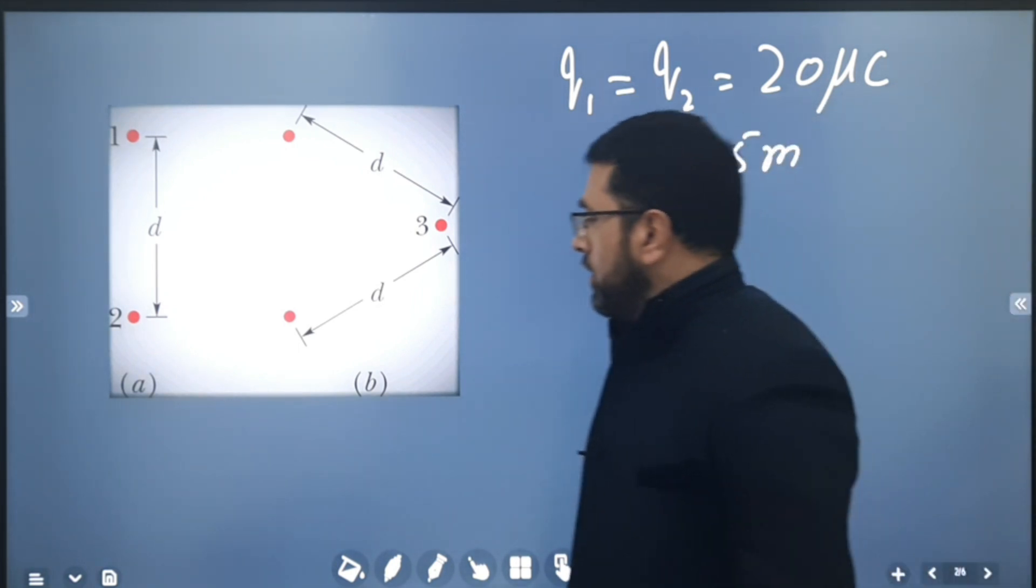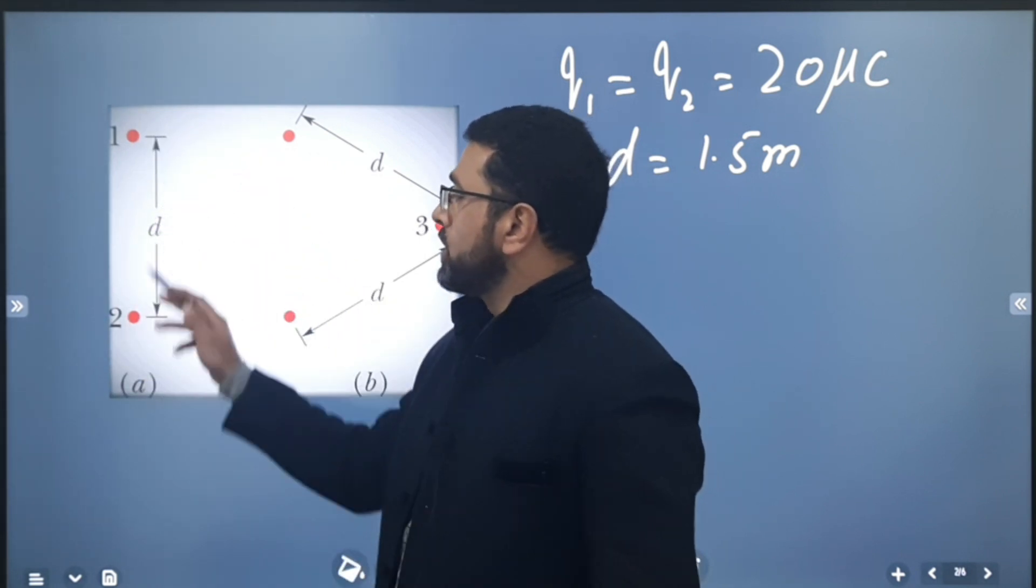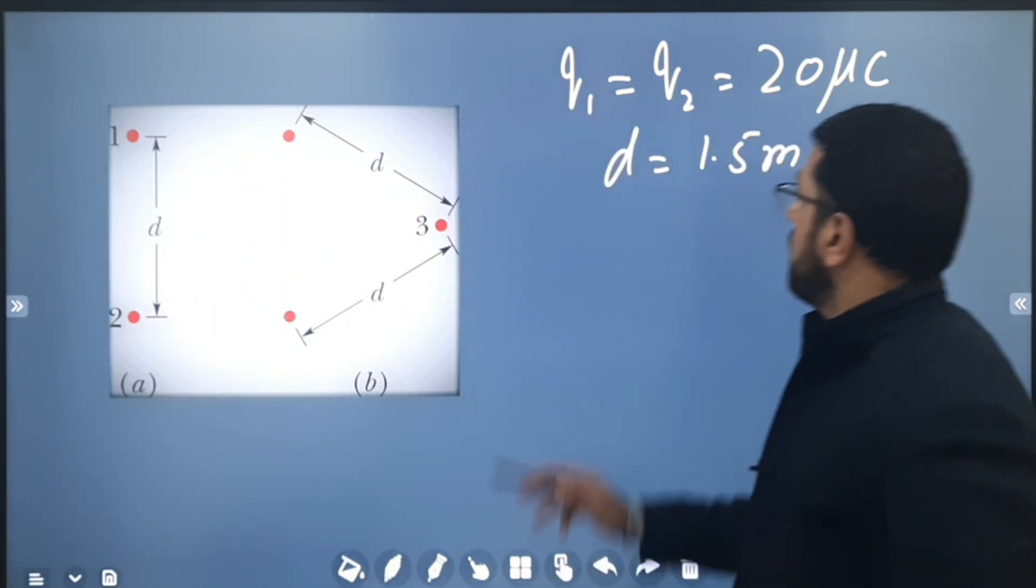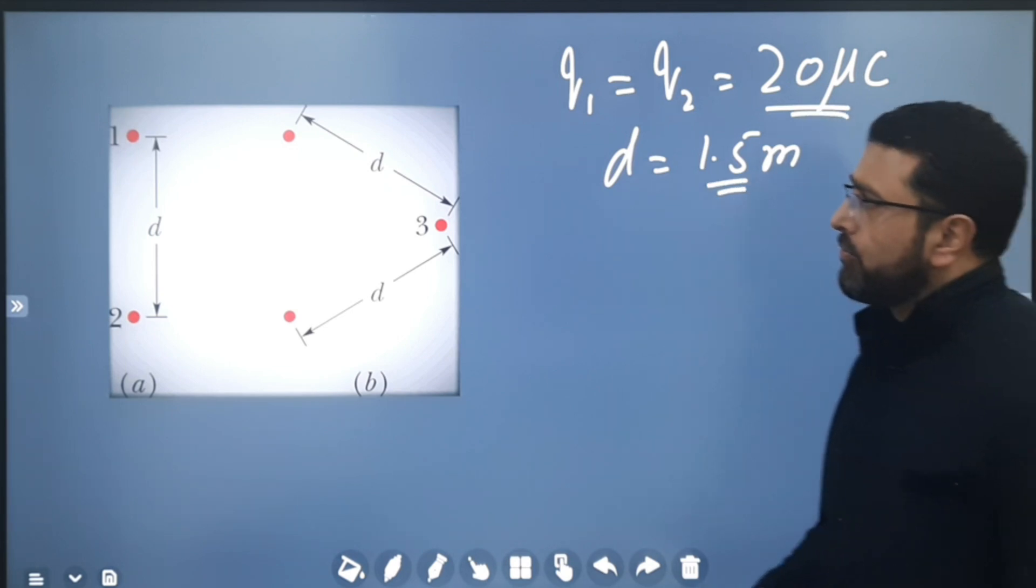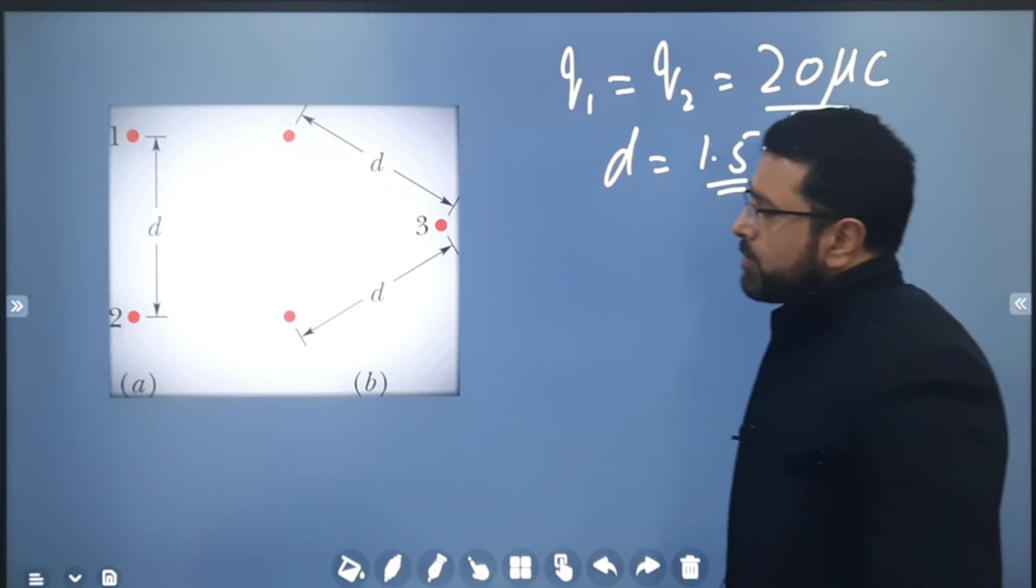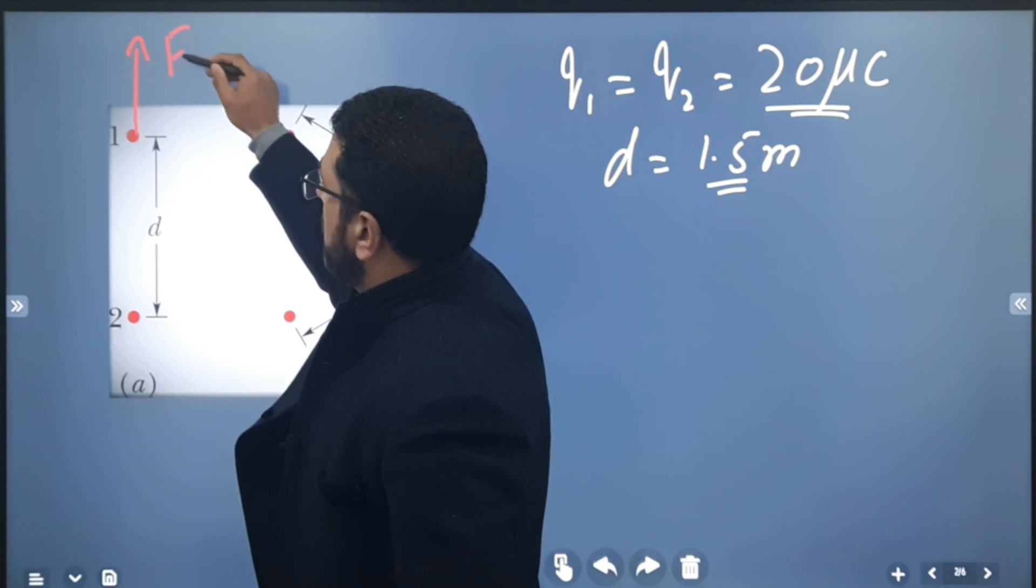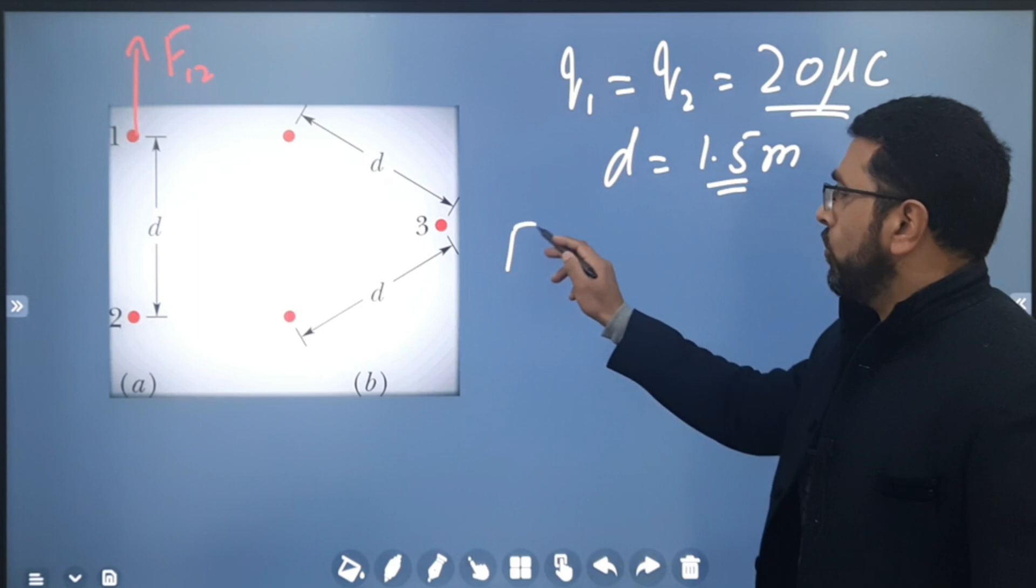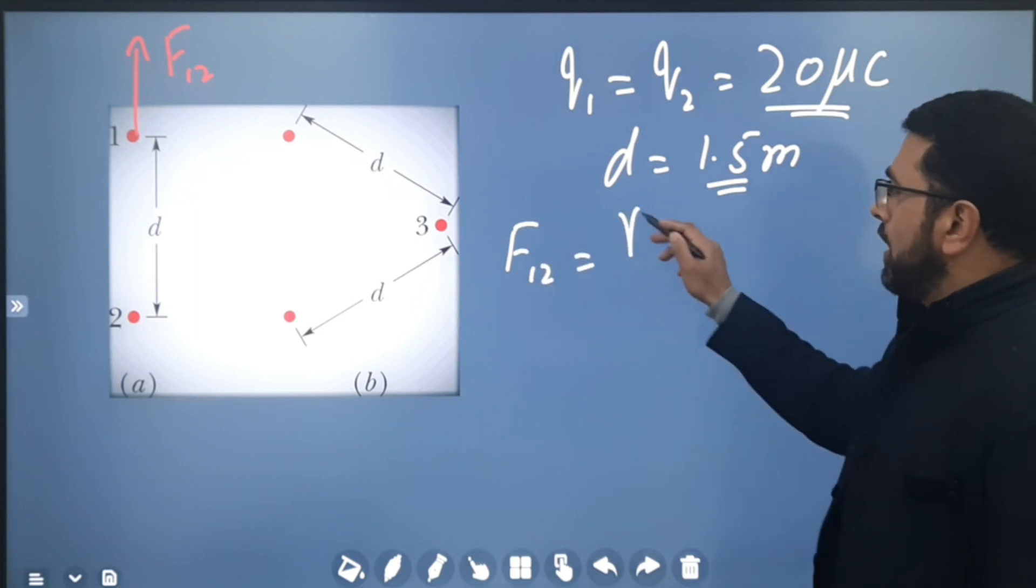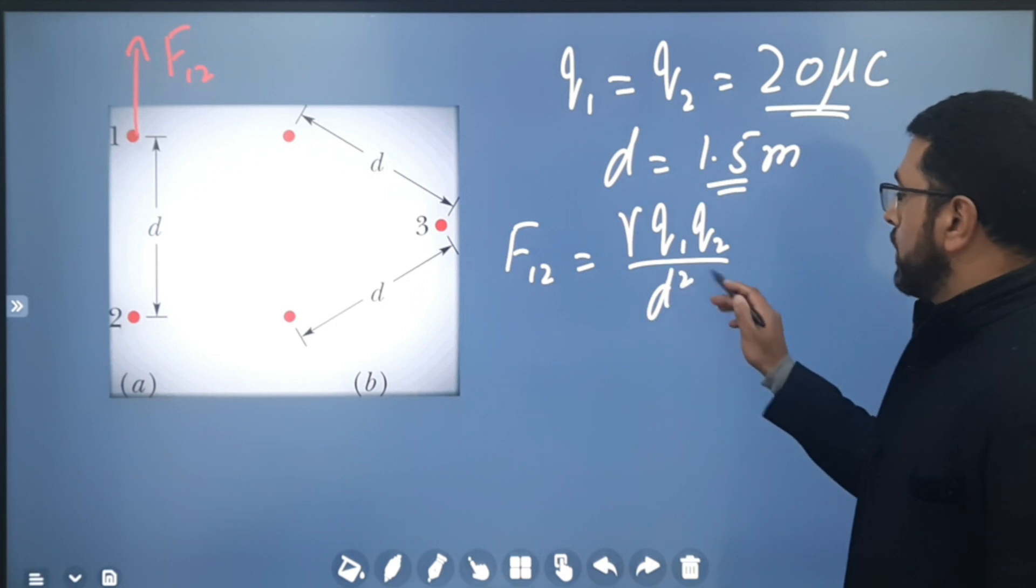So in diagram A, we are given two charged particles, 1 and 2. Both are having the same charge, 20 microcoulombs, and are separated by 1.5 meters. We just have to find out the force that 1 experiences because of 2. That force will be repulsive because they are like charges, and magnitude of that force is simple Coulomb's law: k q₁ q₂ divided by d².